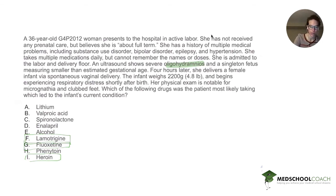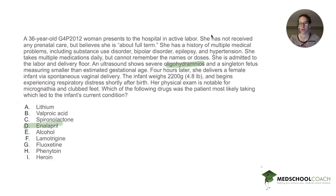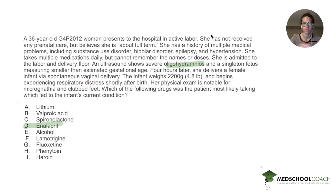So our answer is enalapril, which is an ACE inhibitor that causes renal damage, decreasing urine production and leading to oligohydramnios. And that's today's question of the week — I hope you enjoyed it.